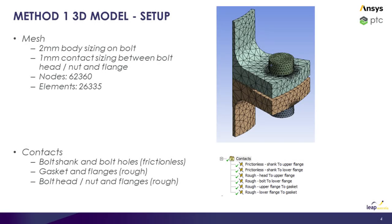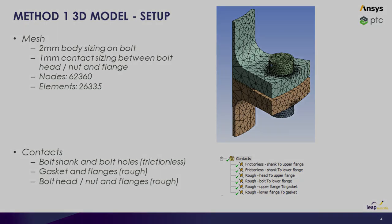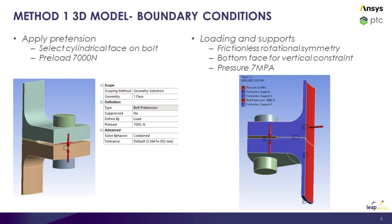An unstructured mesh was generated on the part with a 2mm sizing on the bolt and a 1mm contact sizing between the bolt head and the nut with the top and bottom flange. The contacts between the shank and the bolt holes were considered frictionless, so sliding was allowed and they could come in and out of contact. The contacts between the flanges and the bolt heads and the gasket were considered rough, so the contacts could separate but could not slide.